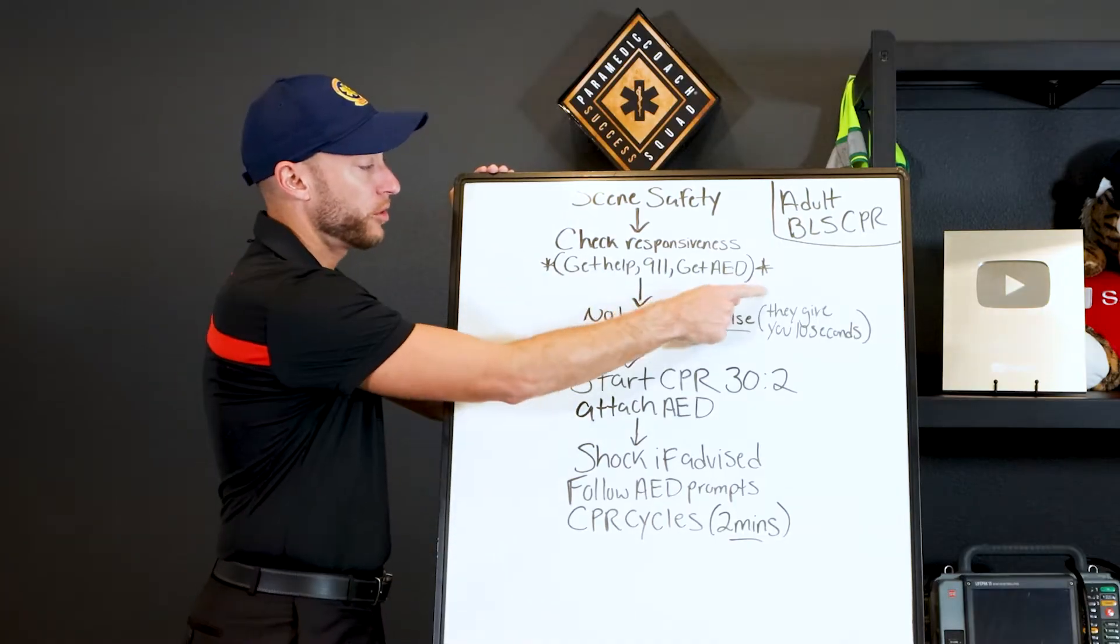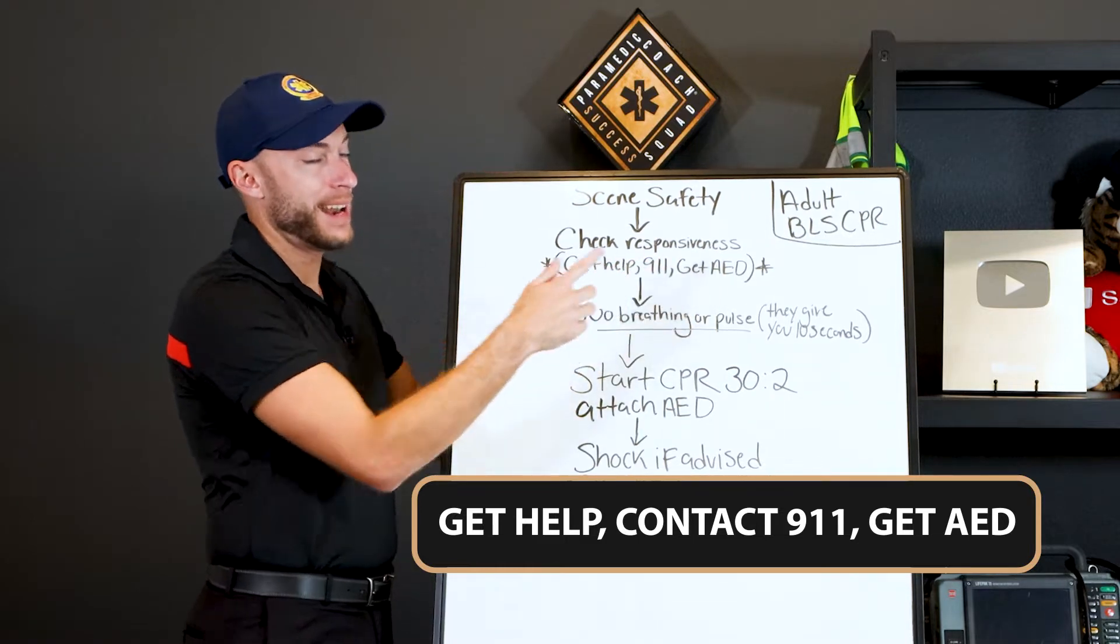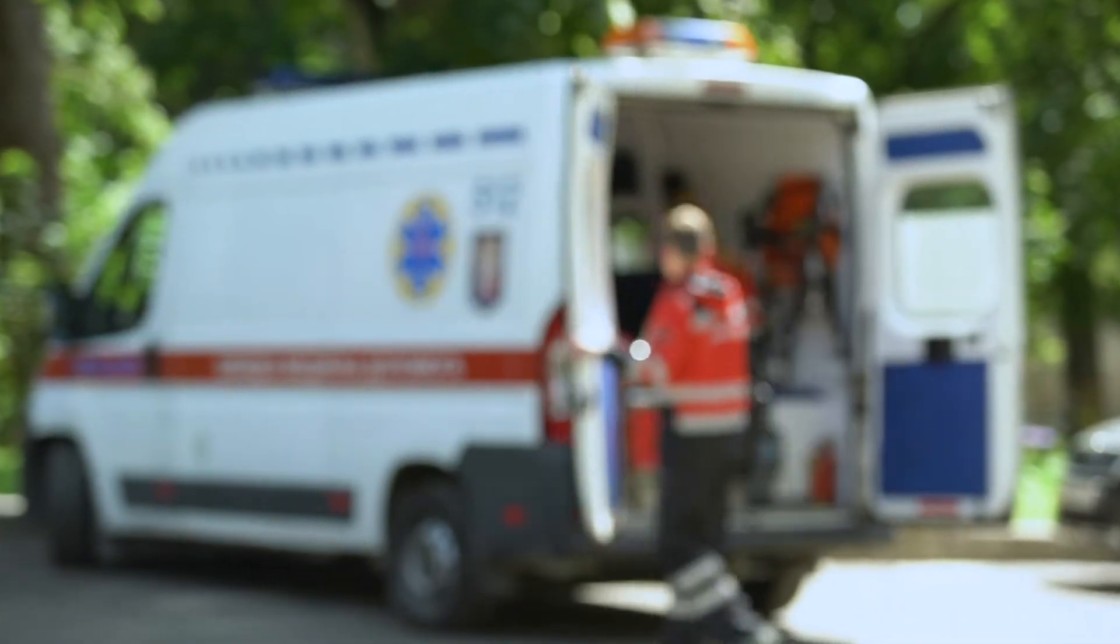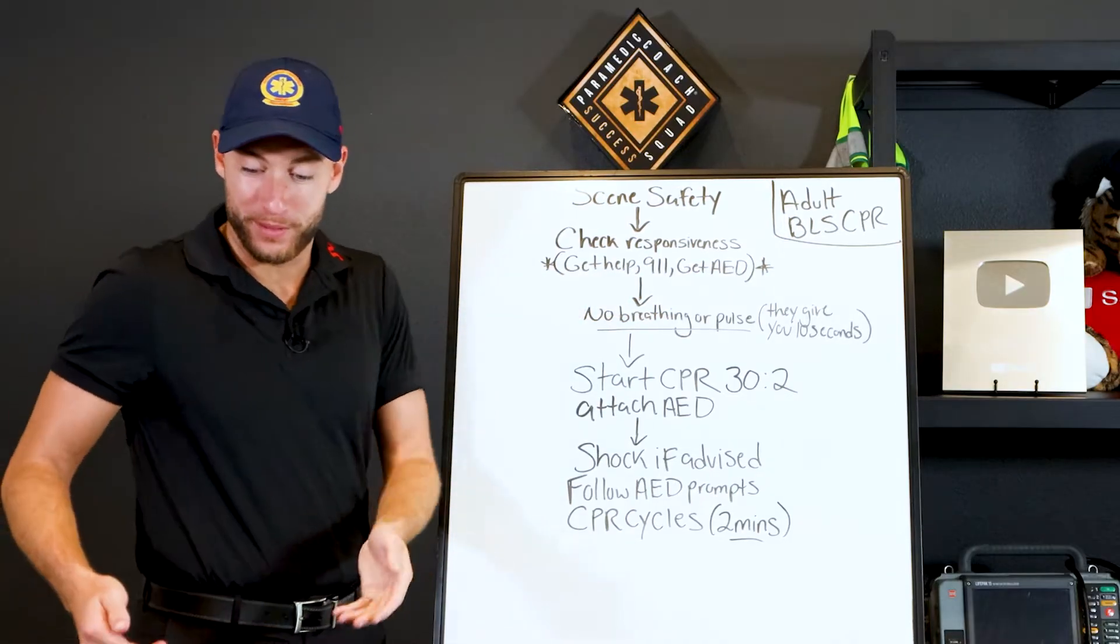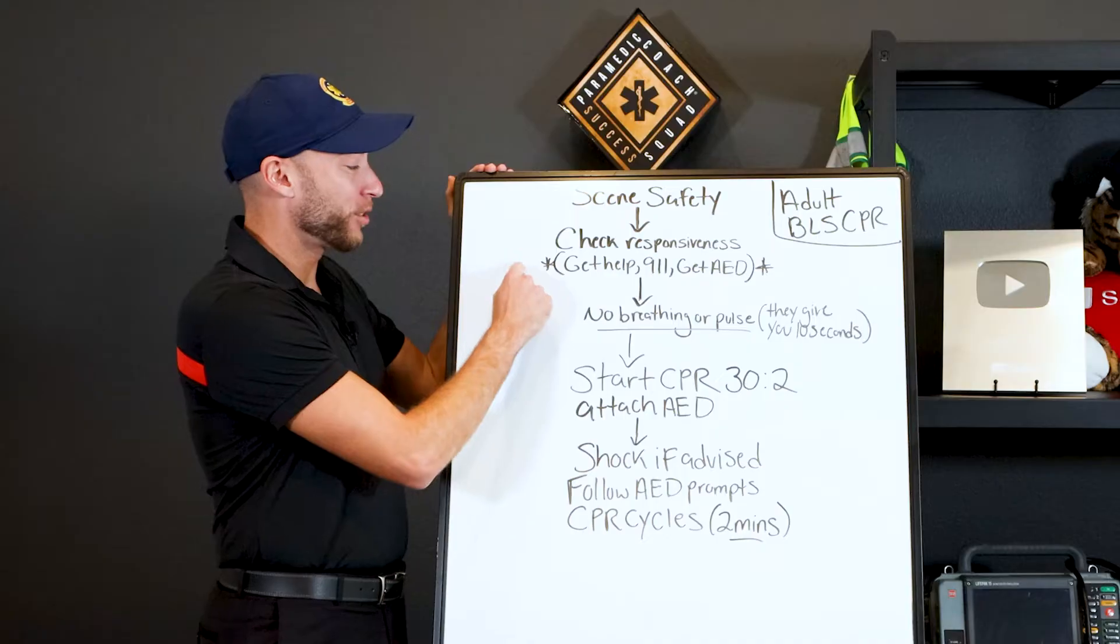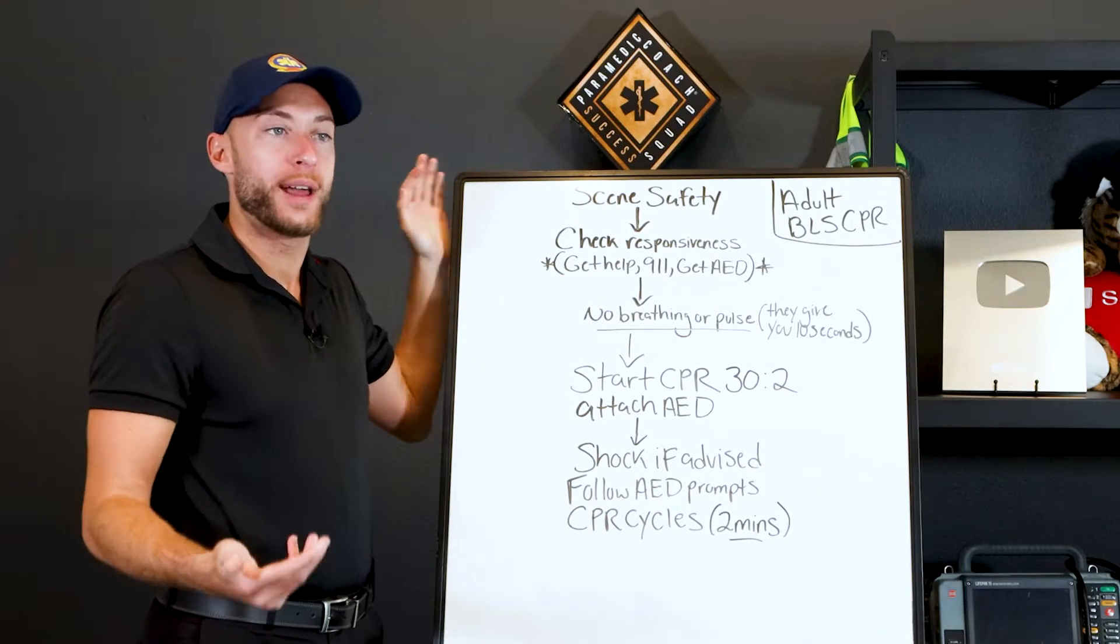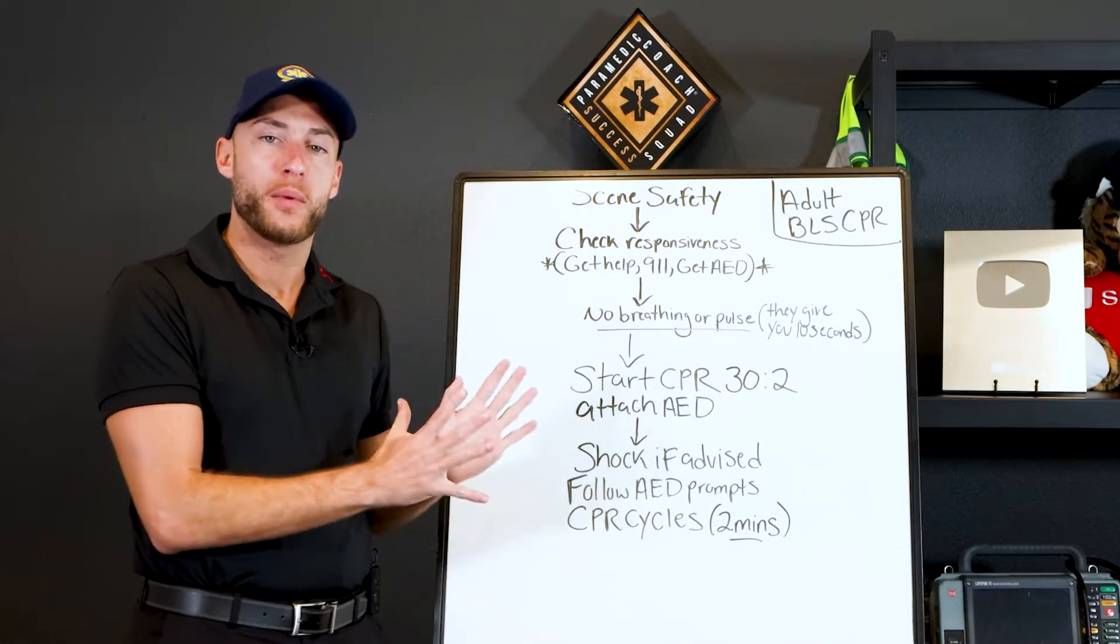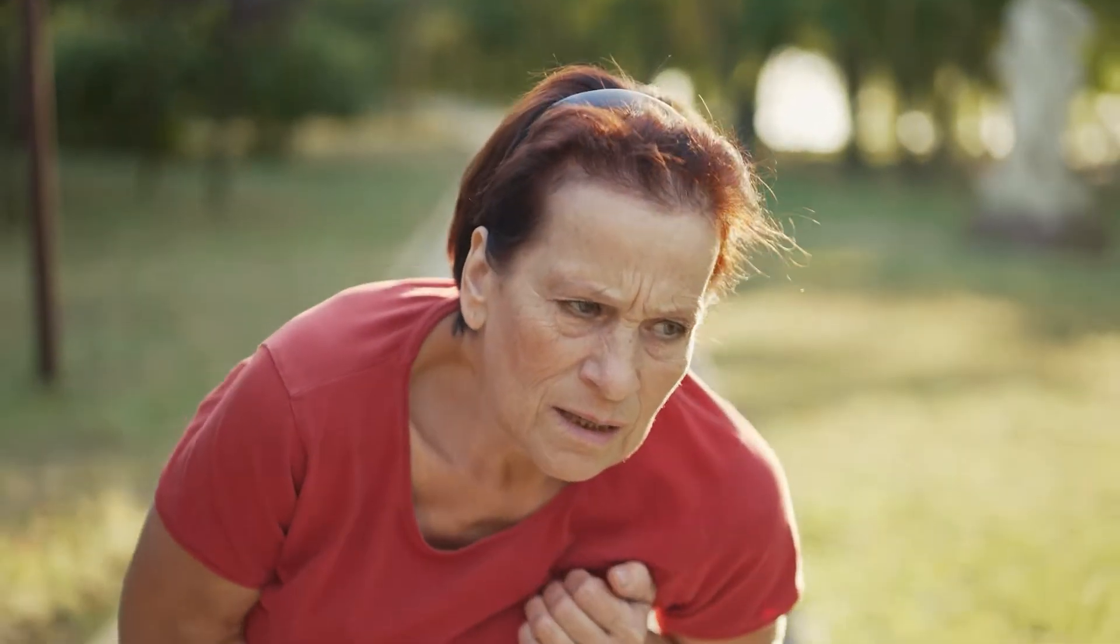Now in parentheses here you'll see it says get help, contact 9-1-1, get an AED. Obviously picture this when we're working on the ambulance, the two EMT crew, and if we have an AED we are 9-1-1 and we have help. The help is my partner. So we've checked all this off because we are EMS.